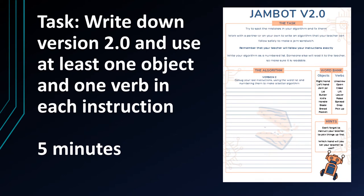So if you have a copy of the worksheet, turn it over and try to fix your algorithm. I've given you a word bank, and my suggestion is that in each instruction you try to write at least one object and one verb. Don't forget to instruct the adult to pick things up first, and don't forget to say which hand to use. Don't worry if it goes wrong — everyone's algorithms go wrong and it can take a little bit of time to fix things and get your JamBot working properly. Pause the video now and give yourselves five minutes to have a go at that.